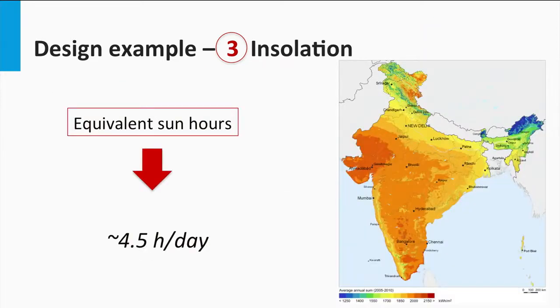Next, we consider the irradiance. Going by the same example as in the standalone system case, a location in India is considered with an average of 4.5 equivalent sun hours.